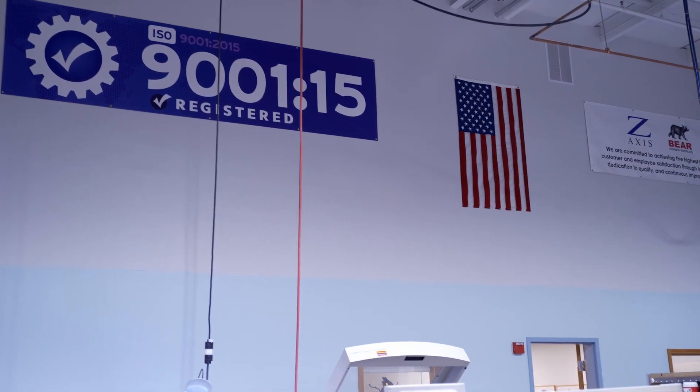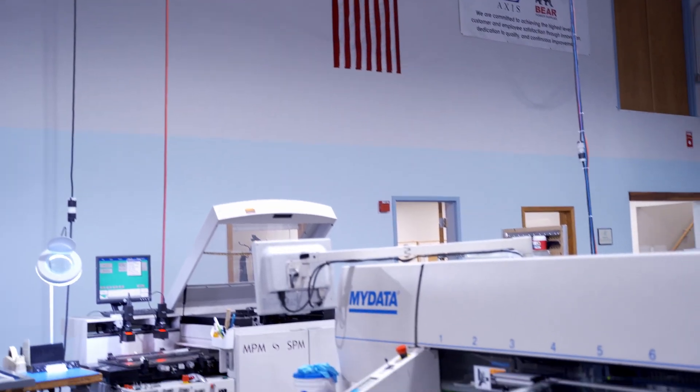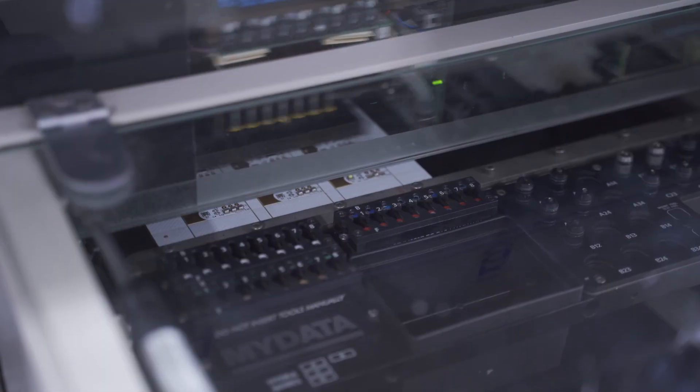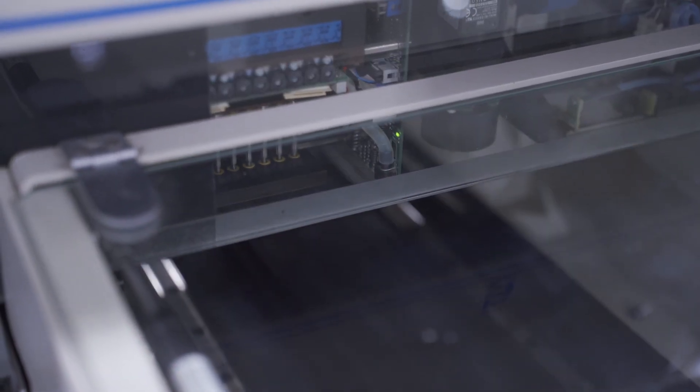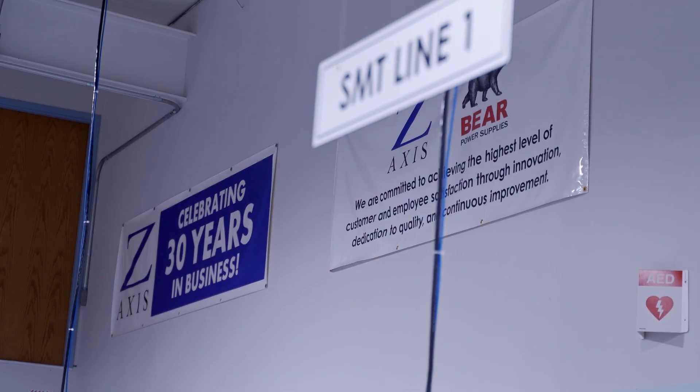And that's why a contract manufacturer with production lines and a separate NPI line gives you advantage over your other options, which include prototype-only places that can't do your production, and contract manufacturers without separate NPI lines.